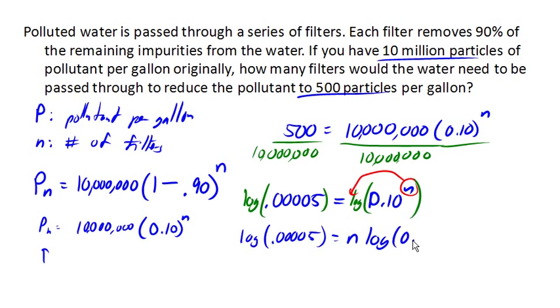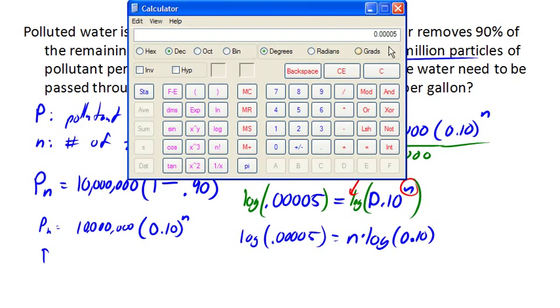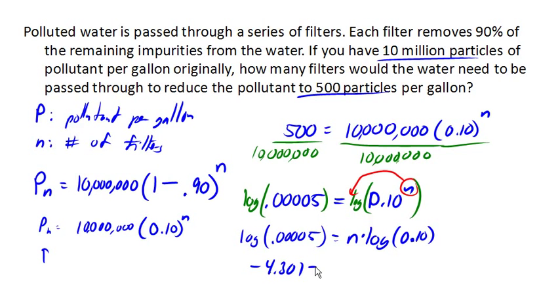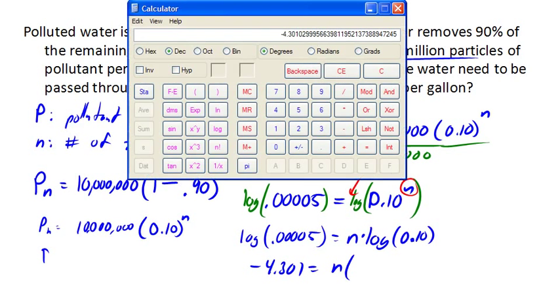Okay? And now we can solve for N. Now we can either evaluate each of these as decimals now or later. Let's go ahead and do it now. So we already have our 0.005 here. Let's take the log of that. Is negative 4.301. So let's see here. Negative 4.301 equals N times, now let's see, 0.10 log is negative 1. Okay? So we got negative 1 as the log of 0.10.